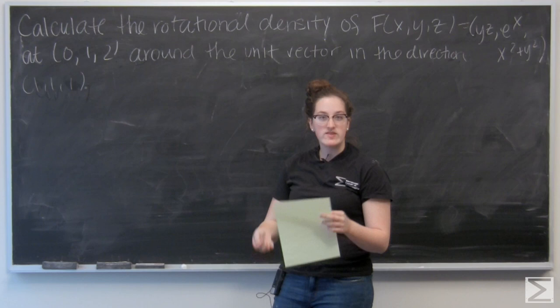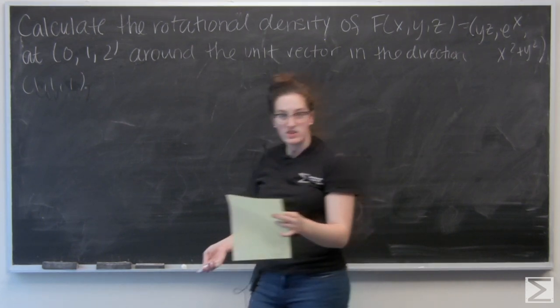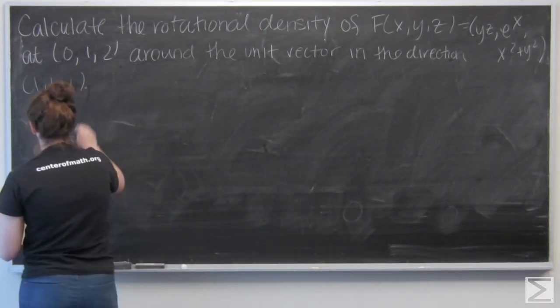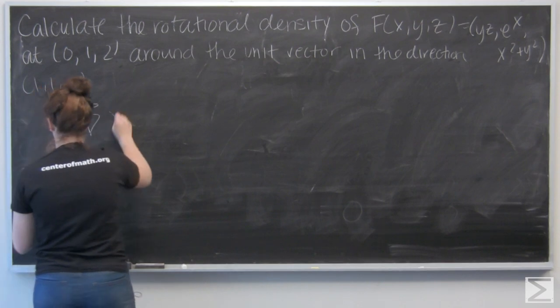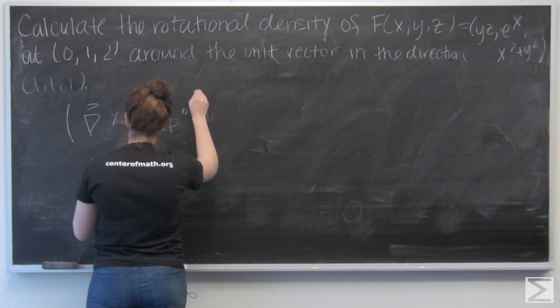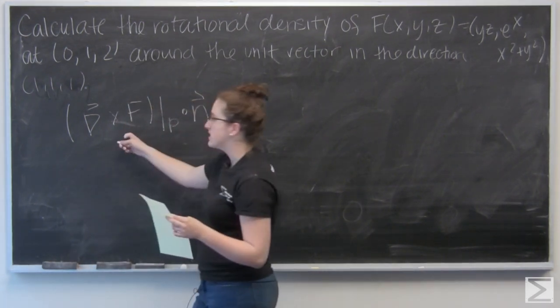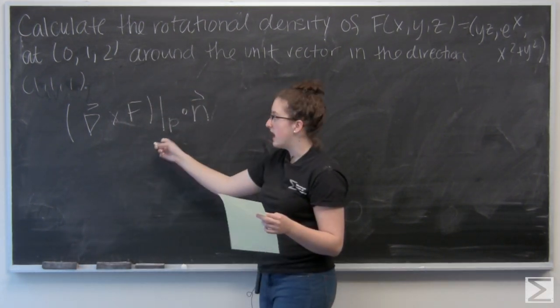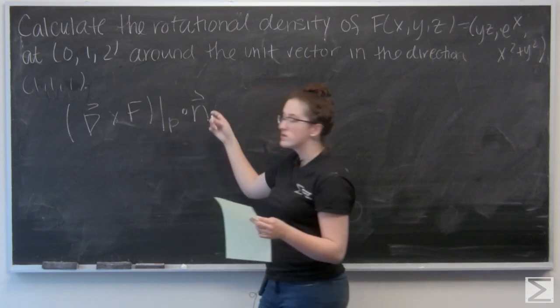In the textbook we're given a formula that tells us rotational density. It is the curl of f evaluated at a point p dotted with a normal vector.